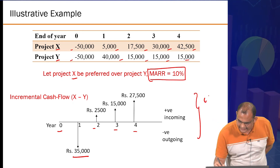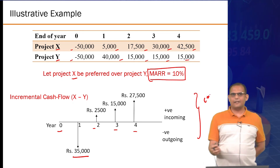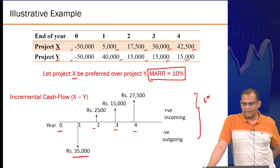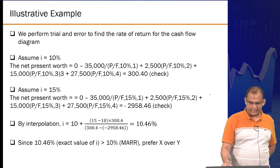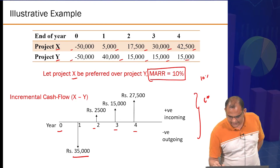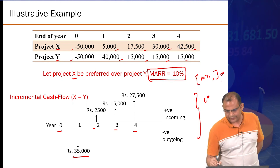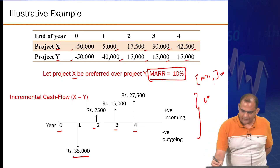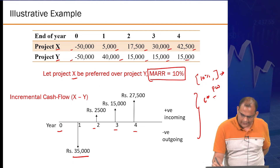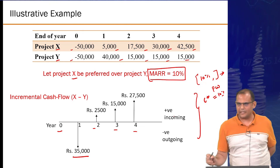Can you calculate the I* value for this incremental series using trial and error? Start with 10 percent and then take increments wherever you want. Tell me: what is the present worth when I equals 10 percent of this incremental cash flow series?